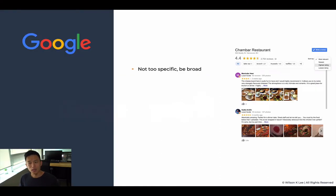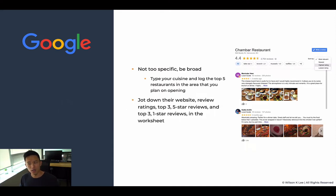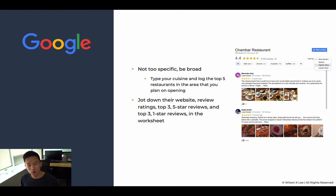On Google, you're going to search for your competitors — search for something that is not too specific. Be broad. Type in the specific cuisine and log the top five restaurants in the area that you plan on opening. After you log the top five, jot down their websites, their review ratings, their top three five-star reviews, and their top three one-star reviews in the worksheet that you can download from the link below.